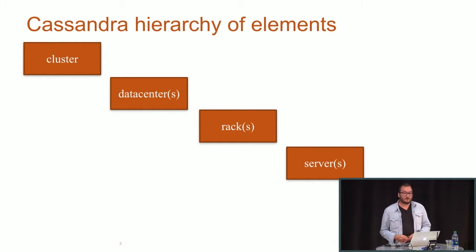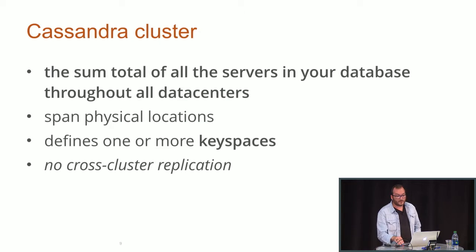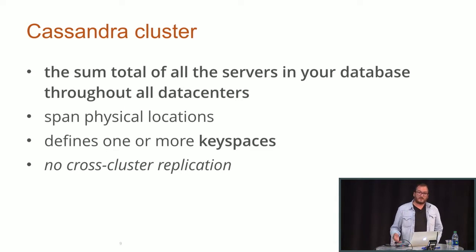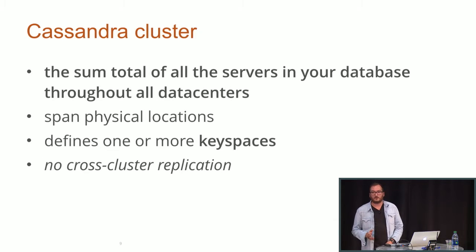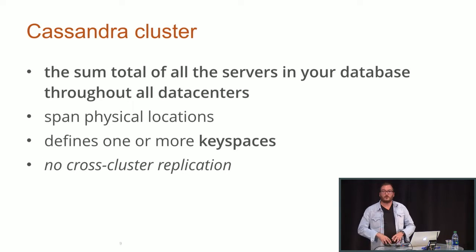Let's see the Cassandra hierarchy of elements. We have a cluster, the cluster has data centers, data centers have what Cassandra calls racks, racks have servers, and at the bottom the most abstracted layer is the v-nodes. The Cassandra cluster is basically the total of all the servers in your database throughout all data centers — spanning physical locations. What's really important to understand is that you don't have cross-cluster replication; replication happens at the keyspace level, at the data center level.